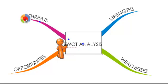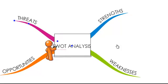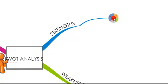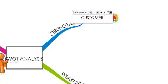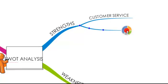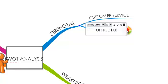Now we're ready to build out another layer of information on our map, and we'll once again be using the same simple technique. Start by clicking our Strengths topic. We can use the New Branch option in red to draw a new branch outwards. We'll type Customer Service as one of our strong points, then repeating the process again to add Office Location as a second strength.